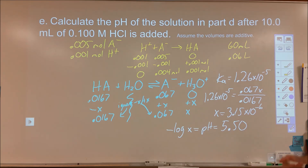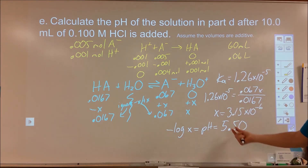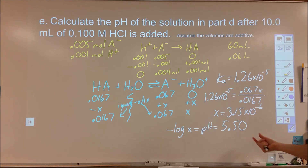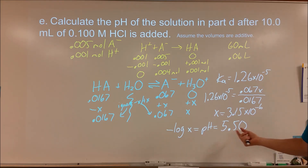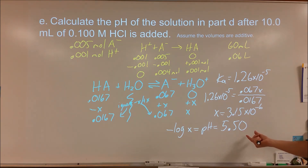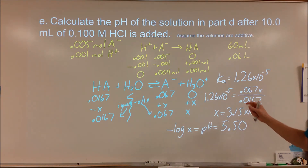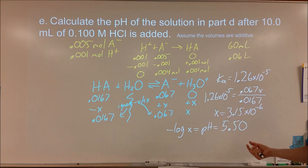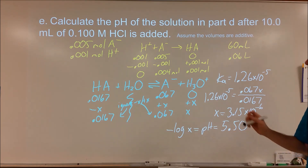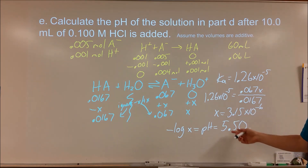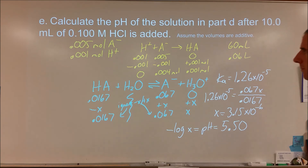Looking back at Part D, I was originally around a pH of 9. I added strong acid, so pH should have gone down. I now have a buffer system, and 5.5 makes sense. It's pretty close to the pKa value, which also makes sense — when you have equal amounts of acid and base, pH equals pKa. Since I have more base than acid at this point, I'm a little above that value.